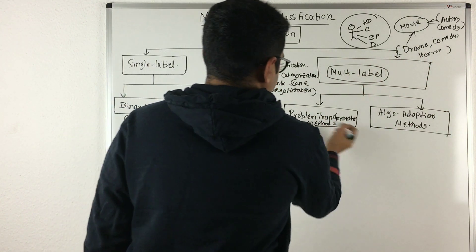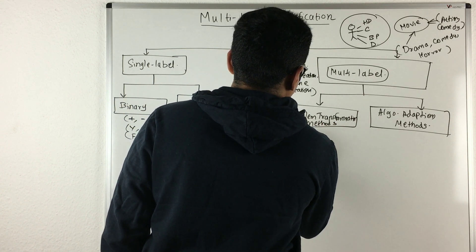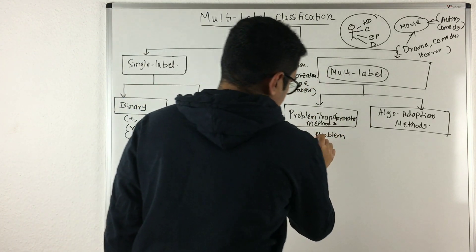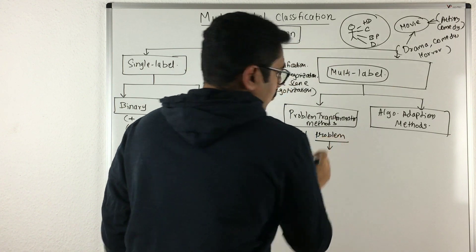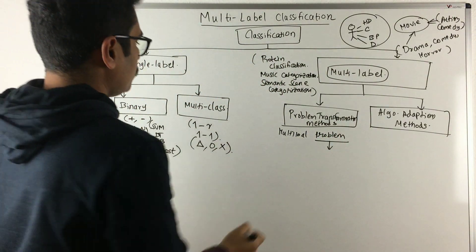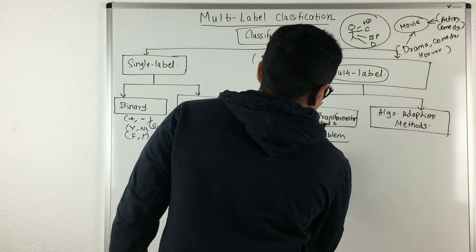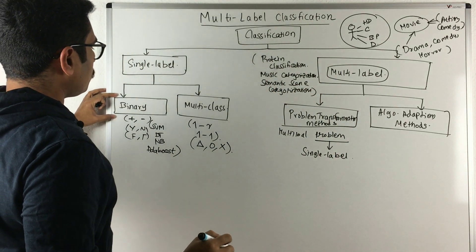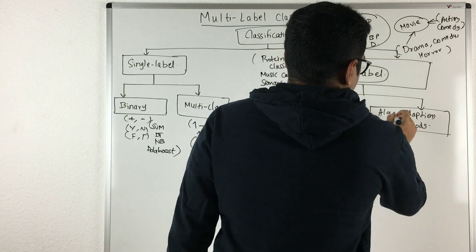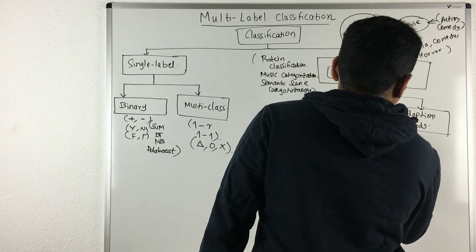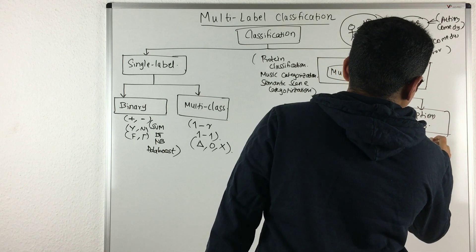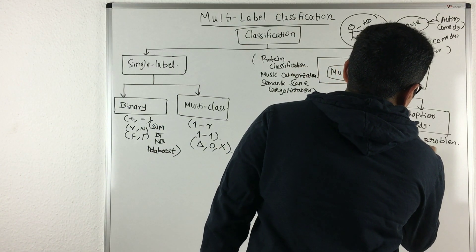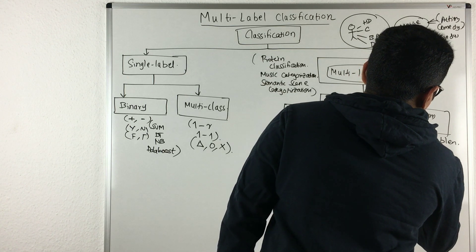In the problem transformation method, you take a multi-label problem and try to transform it into a single-label classification problem, and thereafter you try to label it using a binary problem or a multi-class problem. In the algorithm adaptation method, you take a single-label classification algorithm — say a decision tree — and try to adapt it to your requirements to label your multi-label problem.